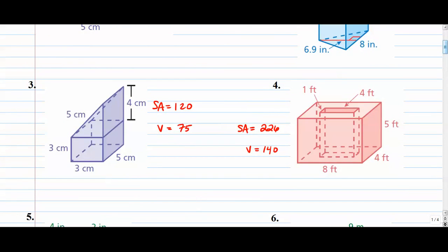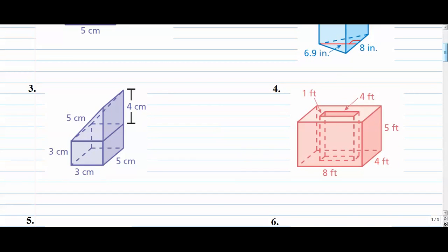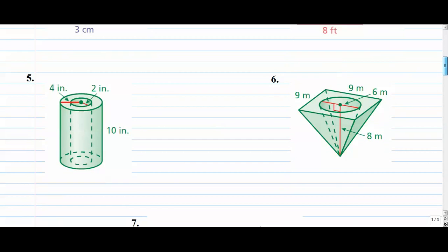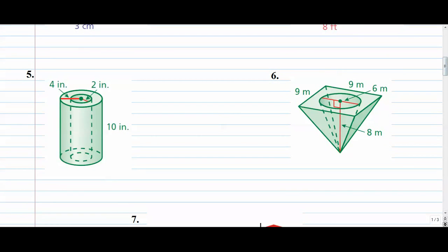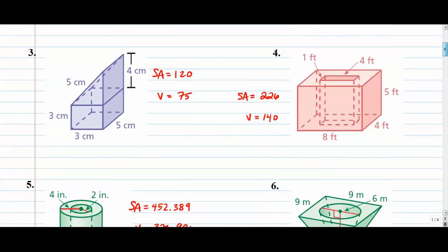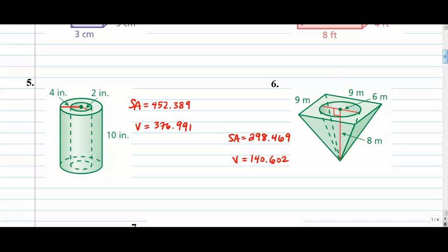Next up, 5 and 6. Give these a shot, surface area and volume of both. Press pause right now. Answers 5 and 6. Hopefully you're doing pretty well. Let's move on to number 7.